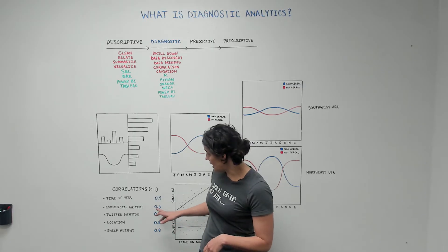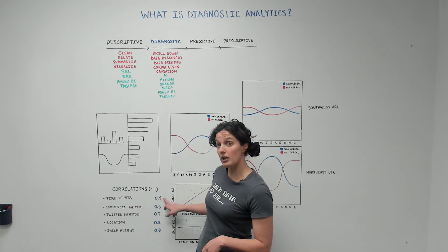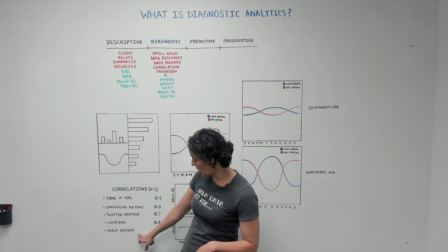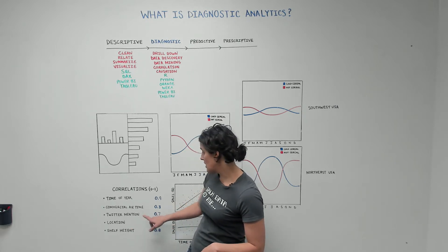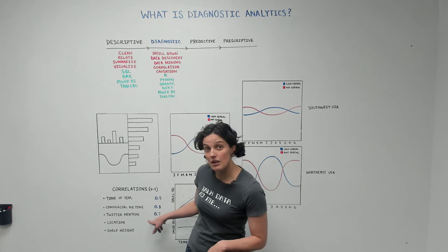In this example, we see that time of year really has a high correlation, as does location and shelf height, and Twitter mentions also is somewhat correlated.